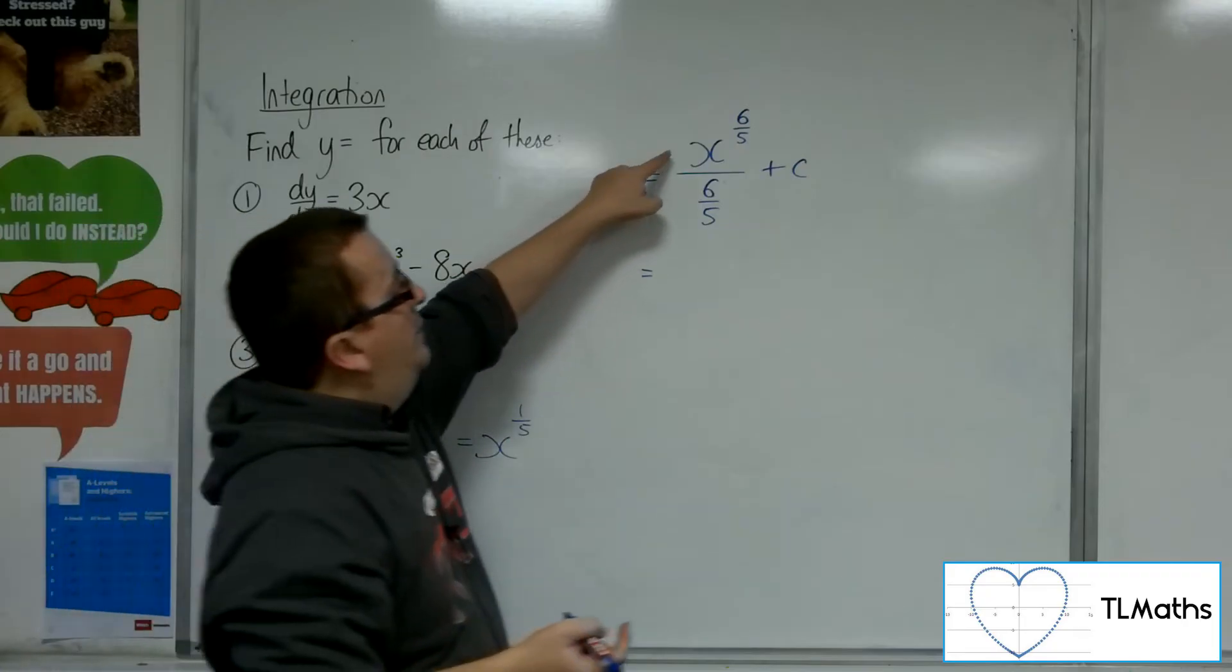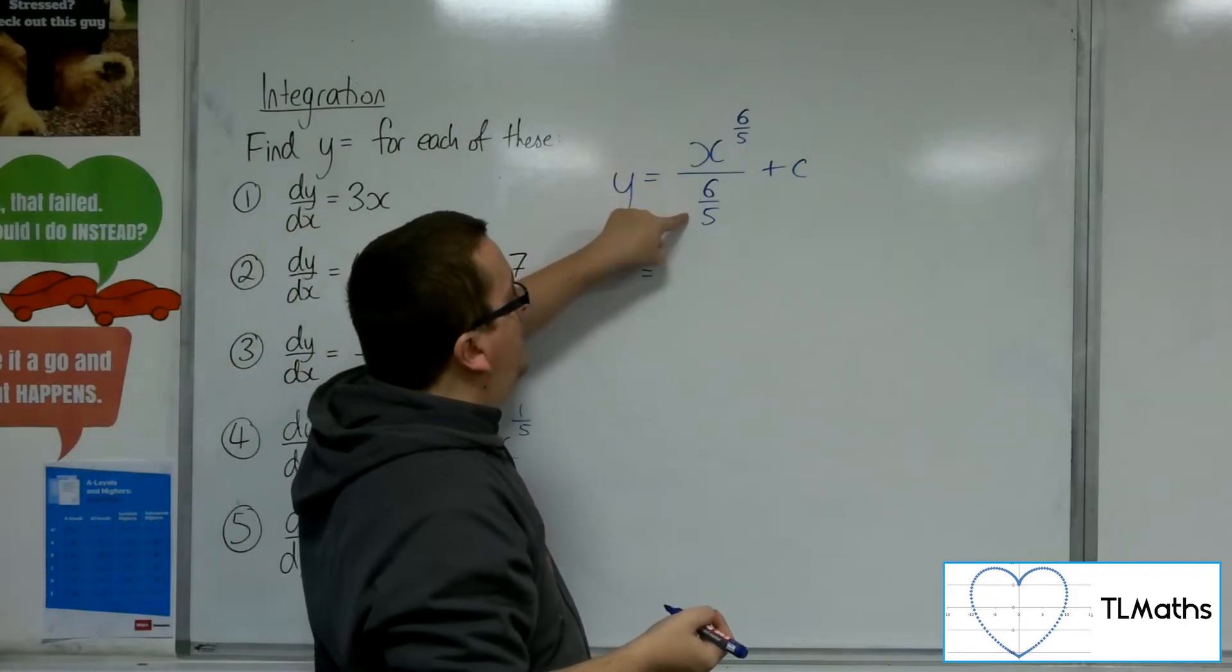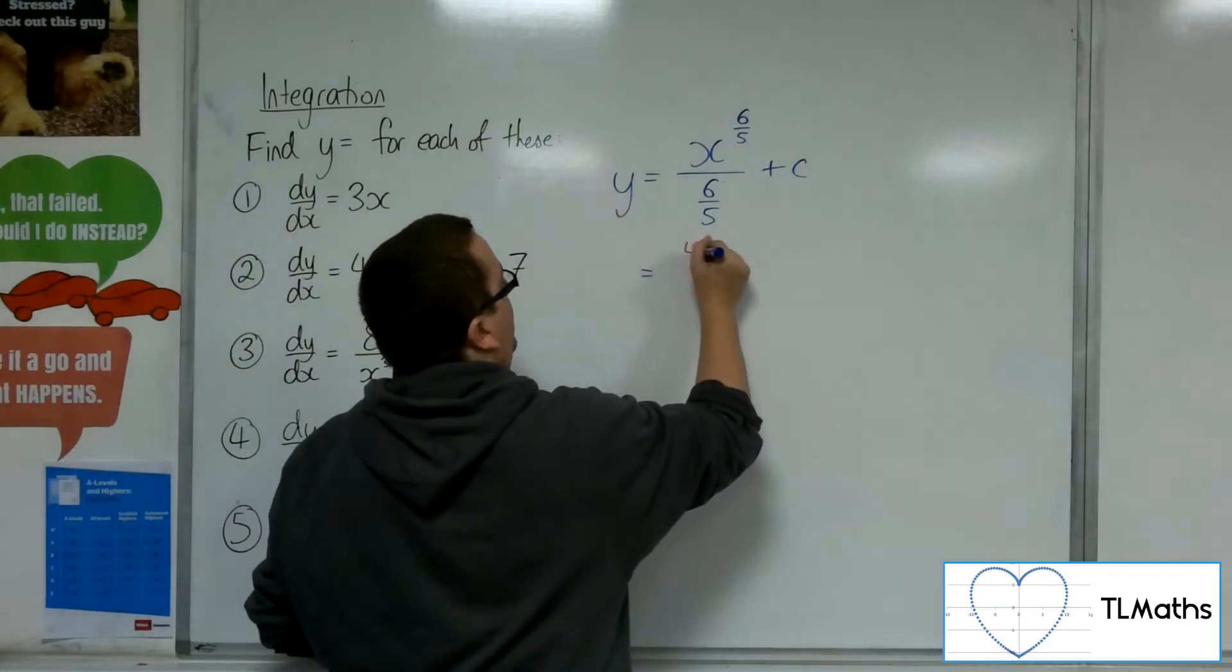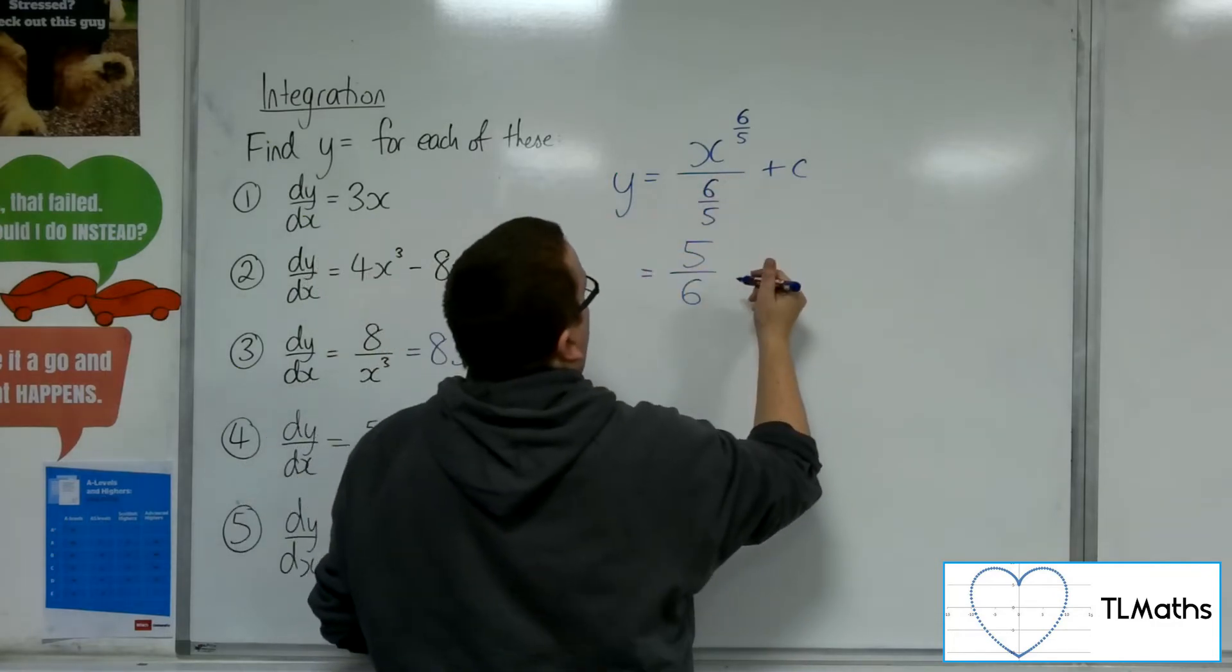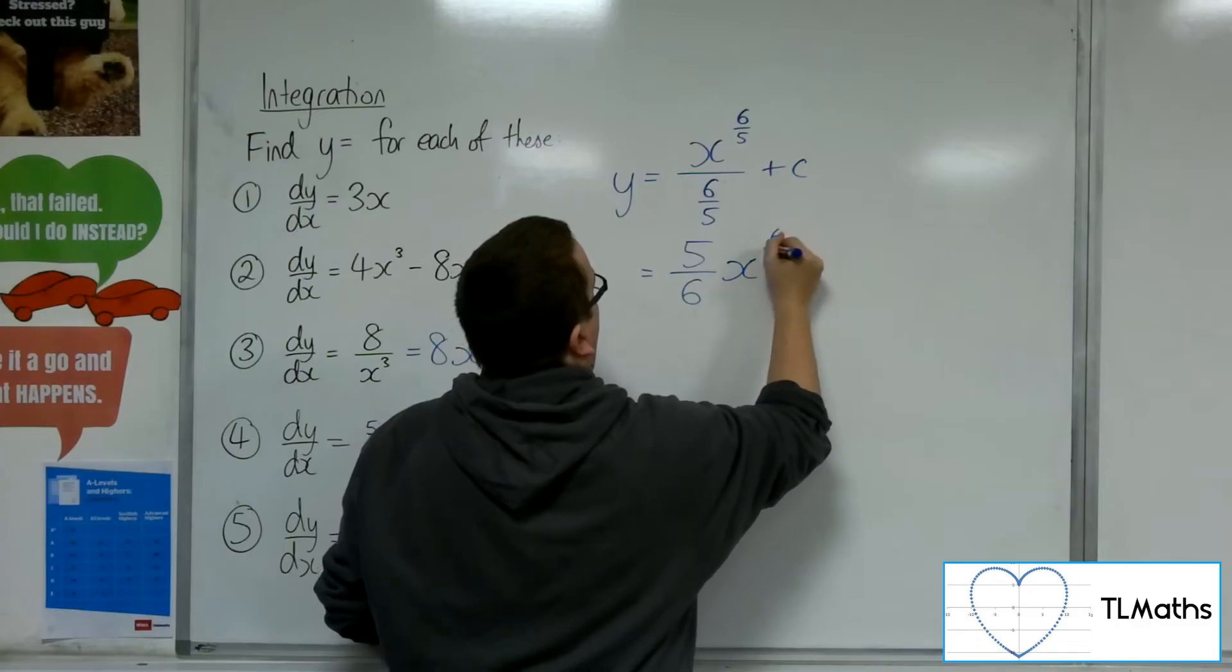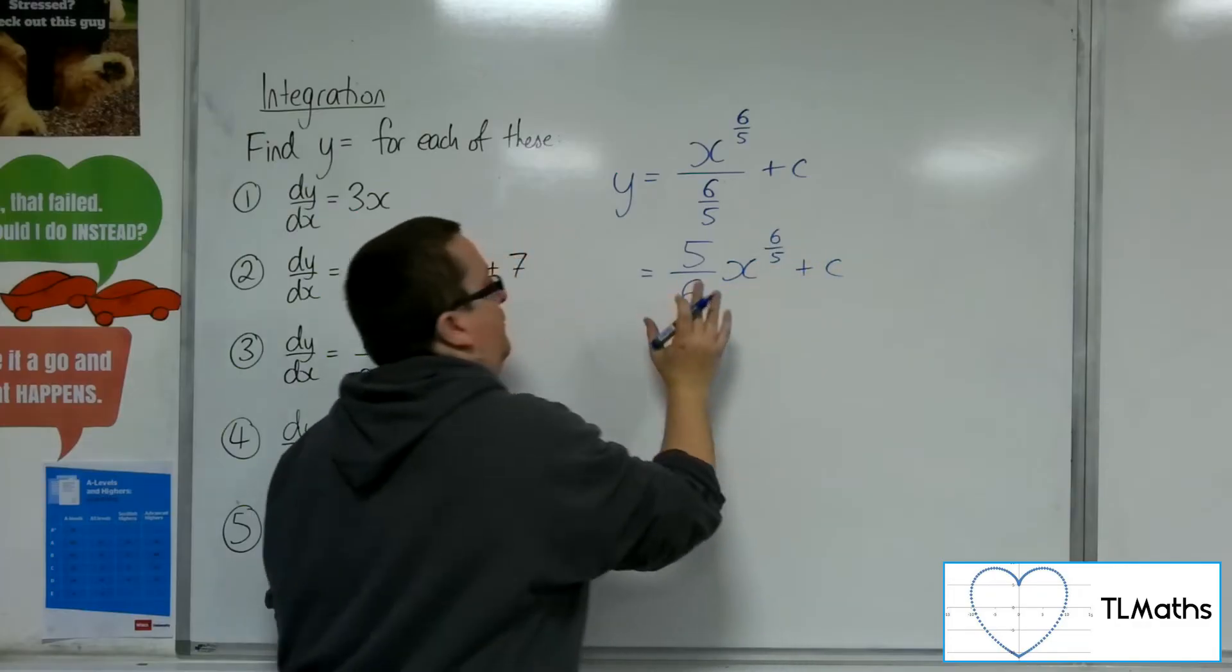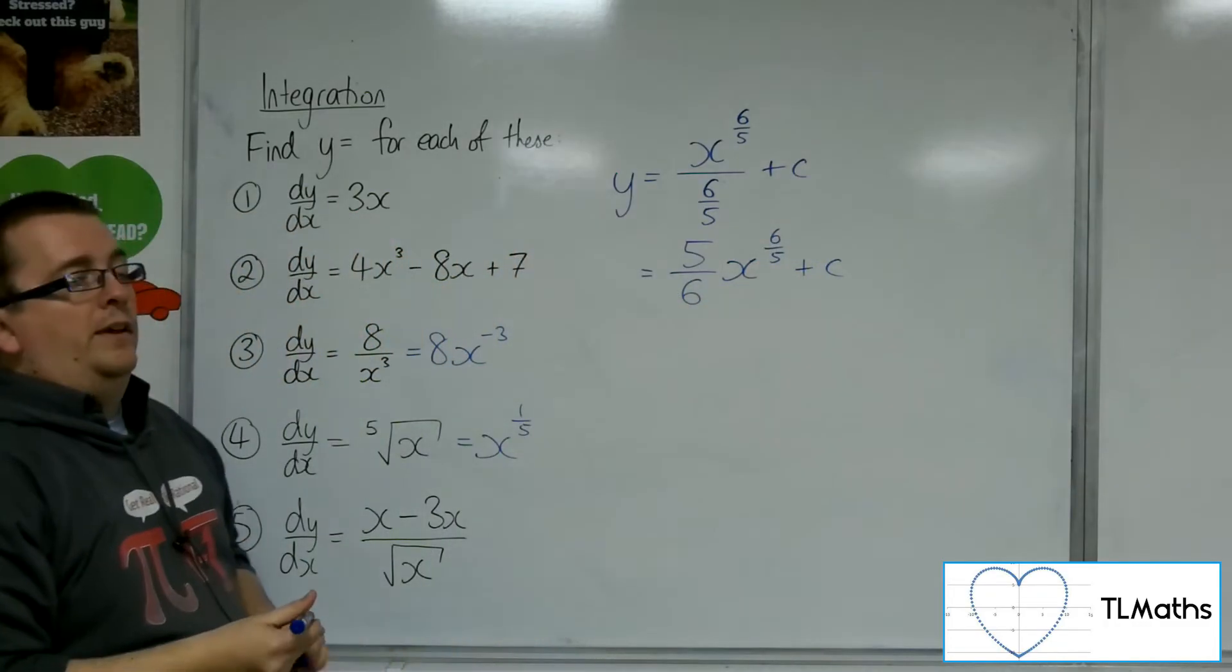Now, the coefficient of the x up here is 1, so 1 divided by 6 fifths is 5 sixths, so effectively we find the reciprocal of that denominator fraction, and we have 5 sixths x to the 6 fifths plus c.